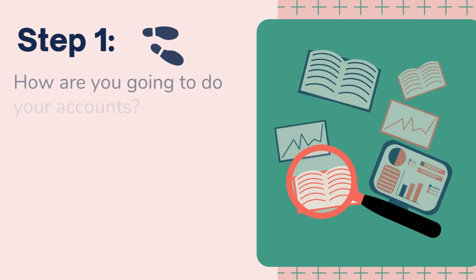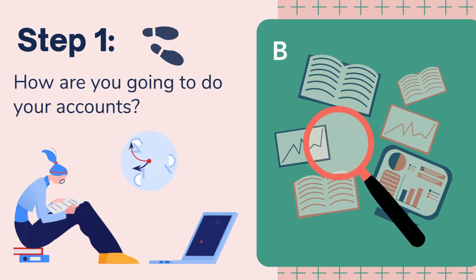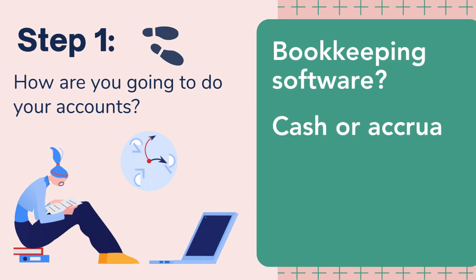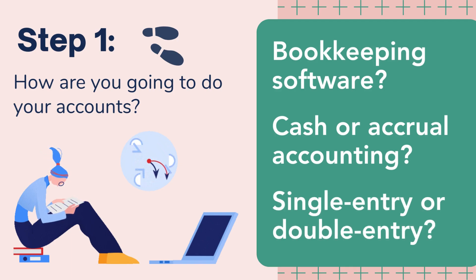Step 1. The first thing you need to do is decide how you're going to do your accounts. This involves not only choosing your software but also deciding on whether to use the cash or accrual accounting system and whether to use single entry or double entry accounting. But don't worry, this is not as complicated as it seems because the decision could be made for you.